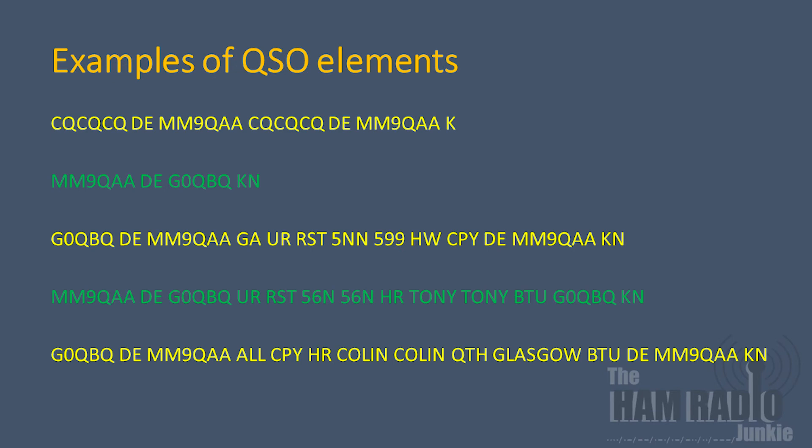Let's look at some examples of how these abbreviations fit into QSOs. The station in yellow is calling CQ and has ended their transmission with a K, inviting anybody to respond. The station in green has then come back with their call sign and the other station's call sign, followed by K-N, meaning they only want the station they're calling to come back.